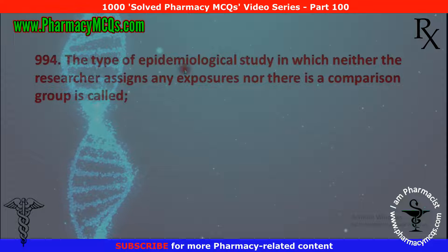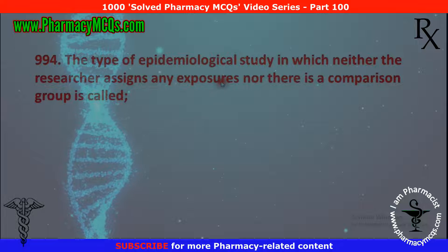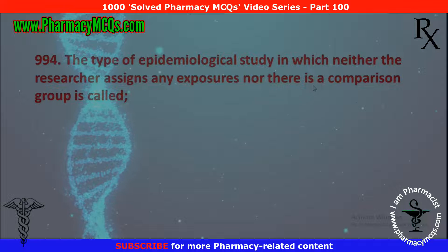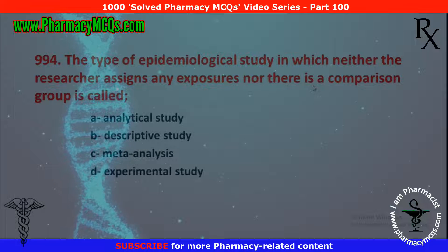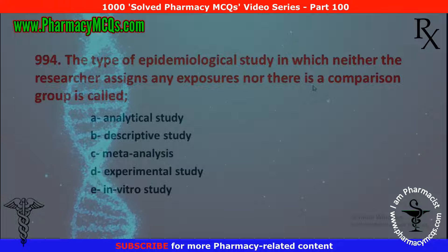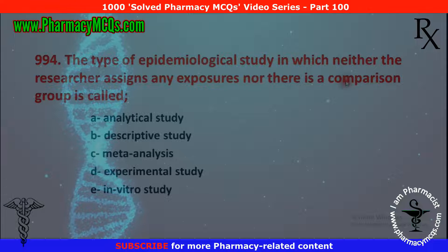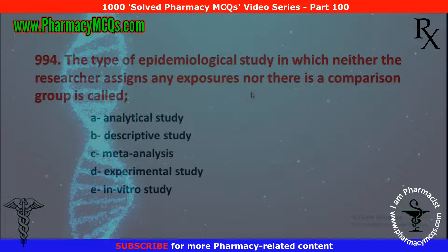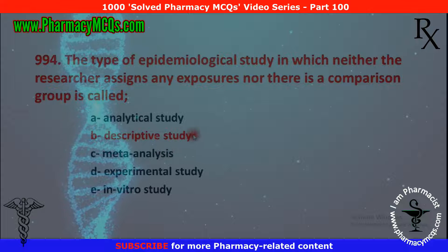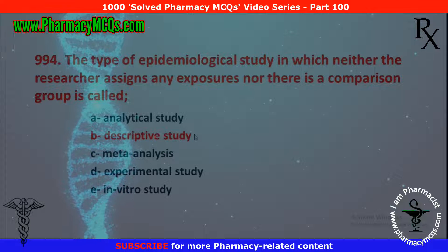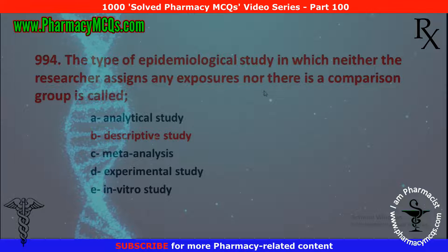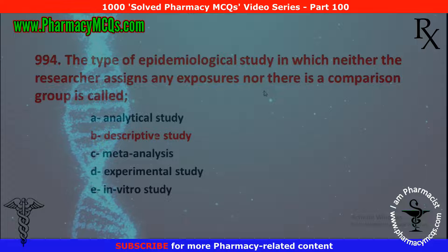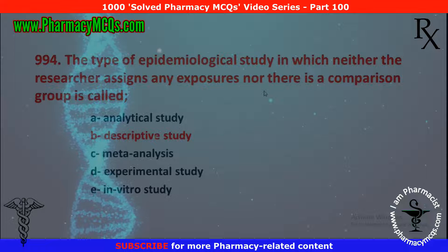Next MCQ: the type of epidemiological study in which neither the researcher assigns any exposures nor there is a comparison group is called: analytical study, descriptive study, meta-analysis, experimental study, or in vitro study. The correct answer is descriptive study — in a descriptive study, neither the researcher assigns exposures nor is there a comparison group. In contrast, an analytical study has no assignment of exposure but does have a comparison group. So option B is correct.